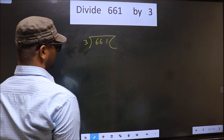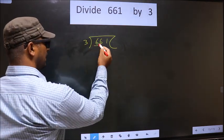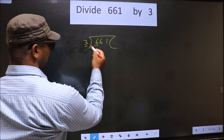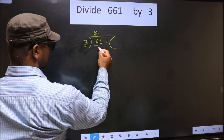Divided by 3 here. Now here we have 6 and here 3. When do we get 6 in the 3 table? 3 times 2 is 6.